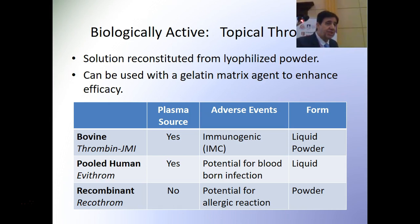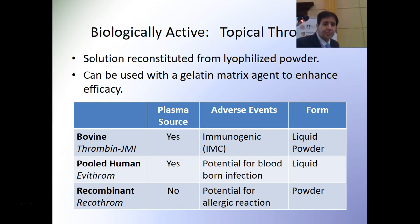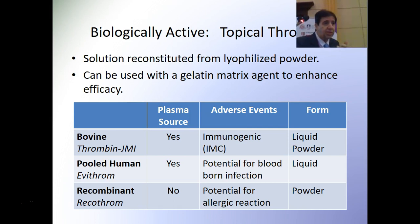The human-derived thrombin carries a small chance of blood-borne infections because its source is human — rare, but we need to think about it. The recombinant thrombin's only problem is if a patient has an allergy to that product.